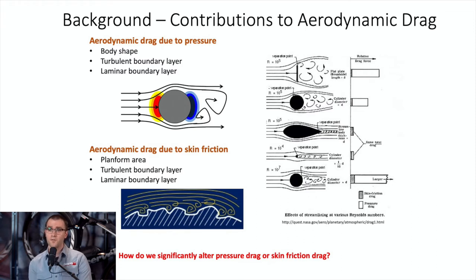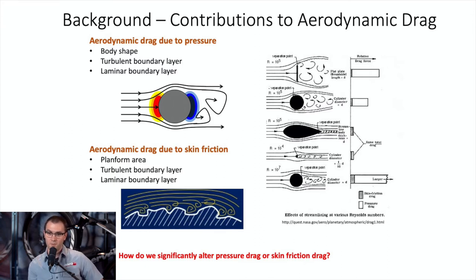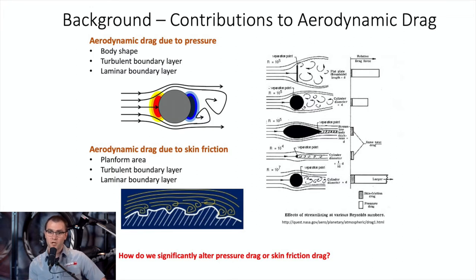For a flat plate sitting in the stream flow, you end up with huge pressure drag and almost no skin friction drag. When you move to the same-height circular cylinder, you see a reduction in pressure drag — the white bar drops — and a slight increase in skin friction, giving an overall drag reduction primarily due to reduced pressure drag. This is related to how streamlines form around the body and where the separation point is.